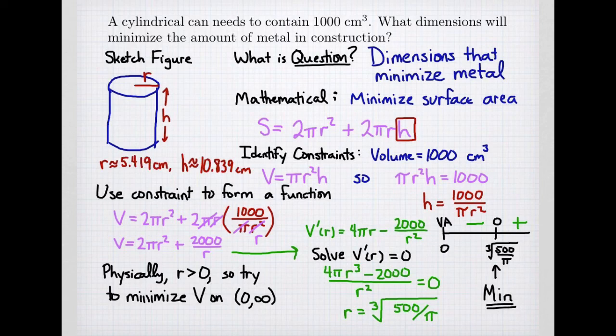My radius is given by this critical point, 5.419 centimeters, and my height needs to be 10.839 centimeters. I got that by plugging my value of r into my height equation. So let's fix that mistake.